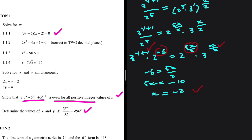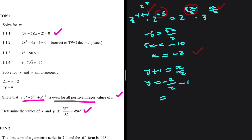Now we have the value of x. Let's find y. From equating base 3 exponents: y plus 1 equals x divided by 2. Since x equals minus 2, we get y plus 1 equals minus 1, so y equals minus 2.